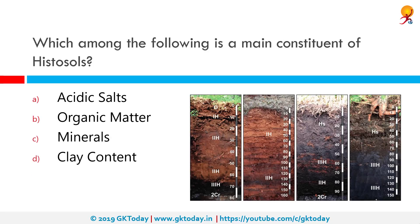Which among the following is the main constituent of histosols? Histosols are composed of organic matter mostly. In both references for soil resources — the World Reference Base and the USDA soil taxonomy — a histosol is a soil consisting primarily of organic materials. They are defined as having 40 centimeters or more of organic soil material in the upper 80 centimeters.